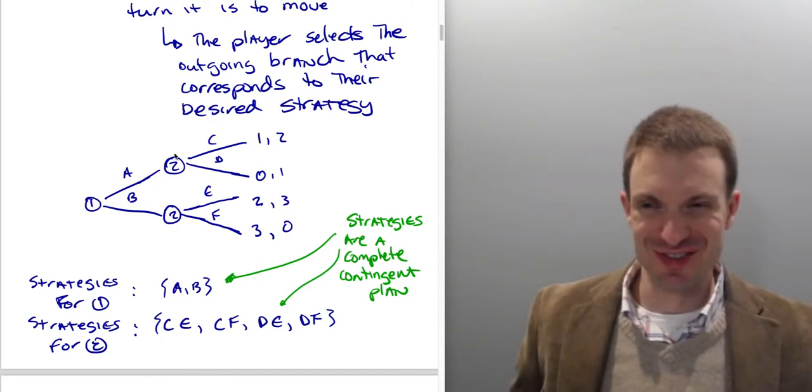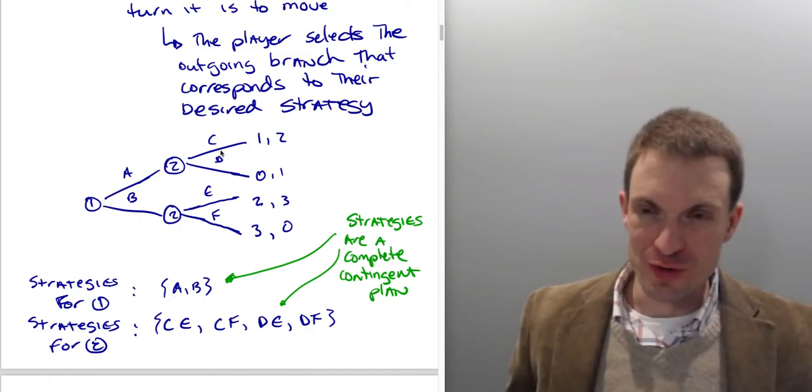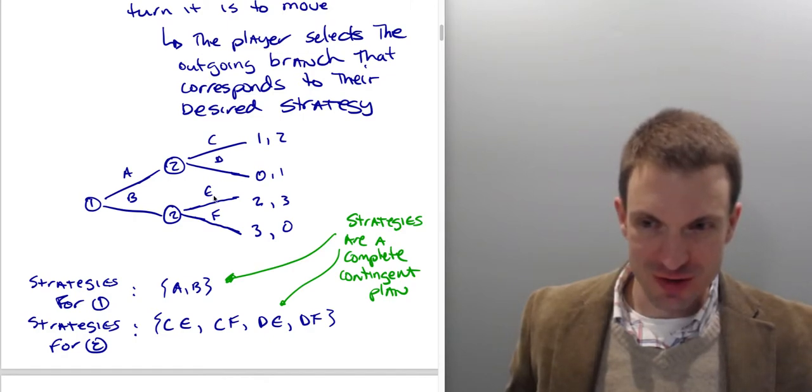For player 1, it's easy. There's two actions, A and B. And so there's two strategies. For player 2, there's four actions: C, D, E, F, and then four resulting strategies.